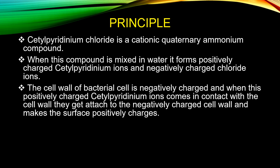The cell wall of the bacterial cell is negatively charged. When the positively charged cetylpyridinium ions come in contact with the cell wall, they get attached to the negatively charged cell wall and make the surface positively charged.